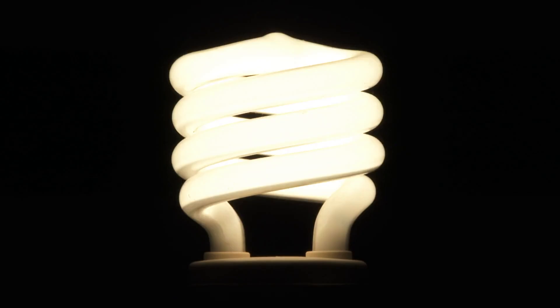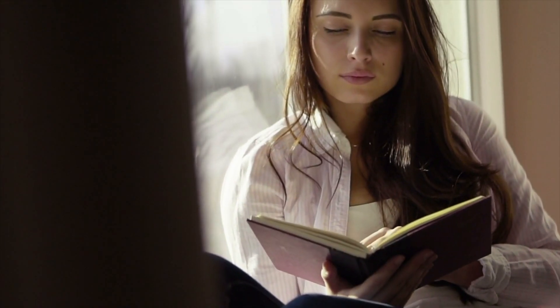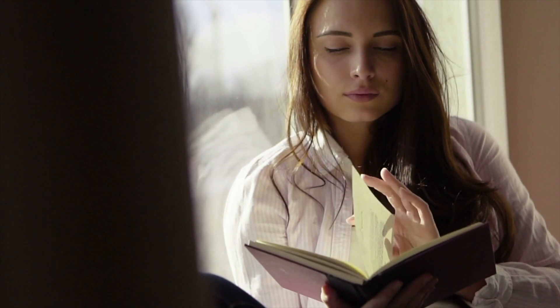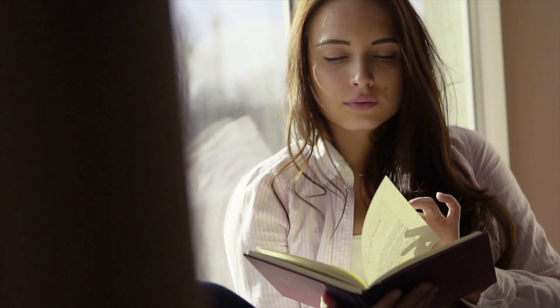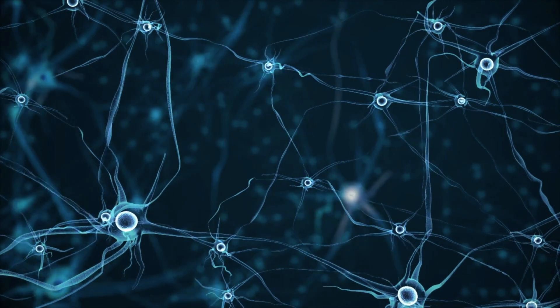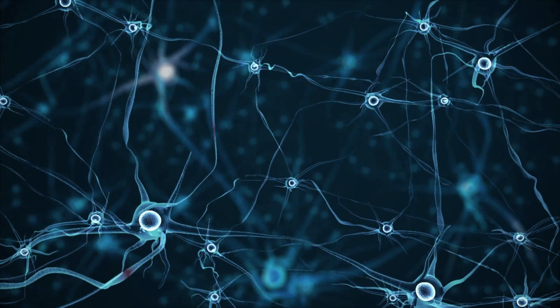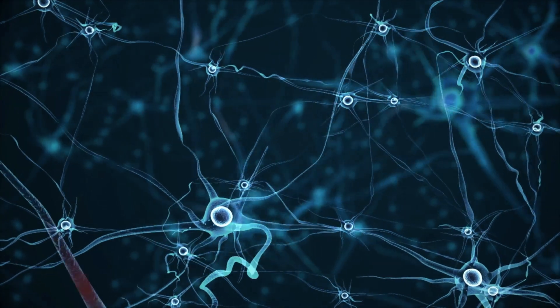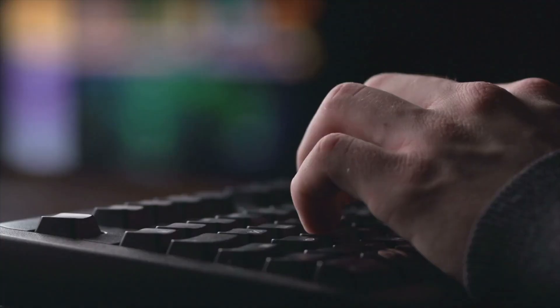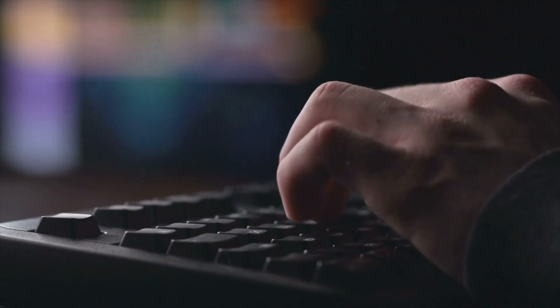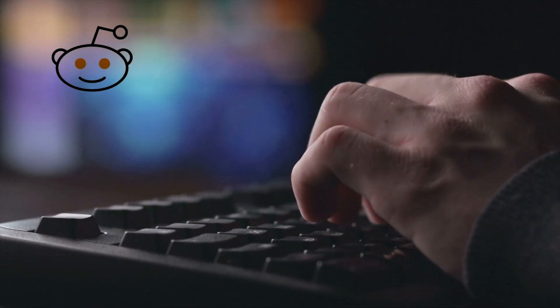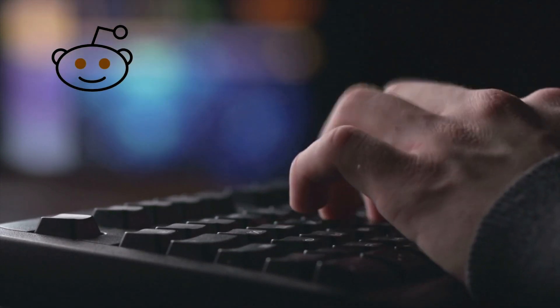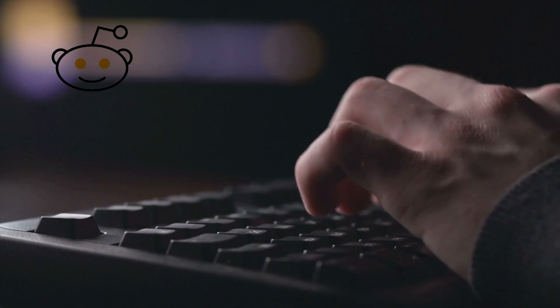It runs on less power than a fluorescent bulb, so it looks for patterns and fills in the blanks all the time. Your brain is a really complicated organ — but if you think you have a high IQ, try arguing with a redditor. Your IQ will decrease by 50 percent within seconds, and that's a proven fact.